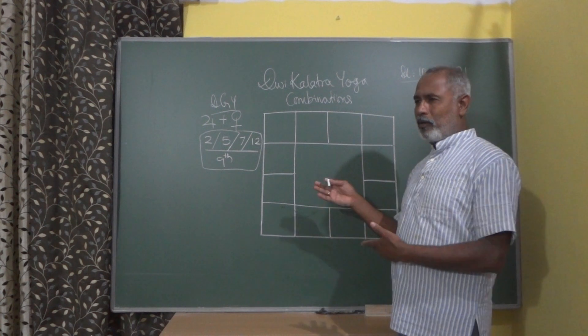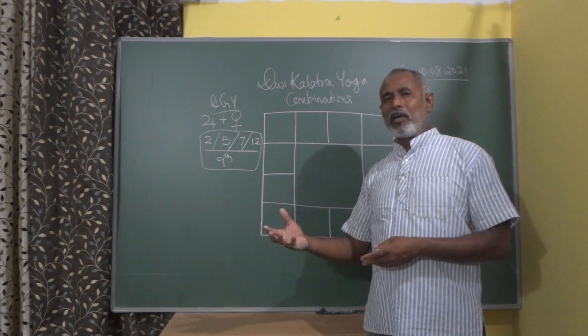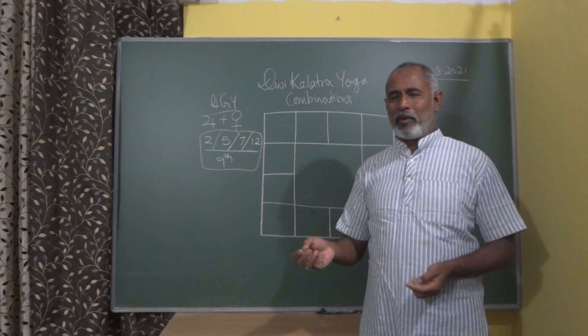then we get that that particular chart has a tendency to get into a 2nd marriage. So let me go through some combinations of Dvikalatra Yoga. Before that, when you see, go through Brihat Parashara Hora Shastra, Brihat Jataka, Varah Meera,